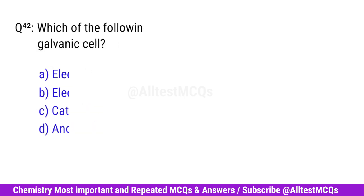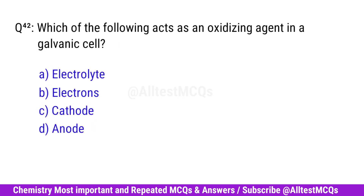Question No. 42. Which of the following acts as an oxidizing agent in a galvanic cell? Right option is C. Cathode.